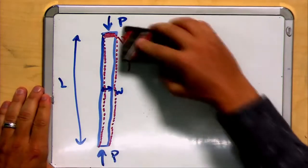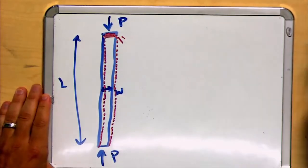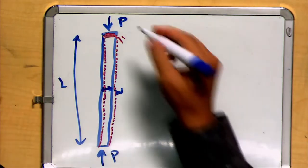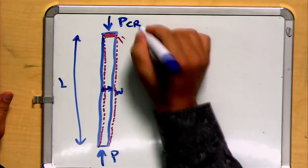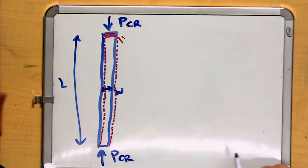Buckling occurs at something called a critical load. So I'm going to identify this P with PCR, PCR, P critical. And it isn't a perfect science as to when it's going to occur. However, observations have shown and testing has shown that there are a few things that this critical load depend upon.